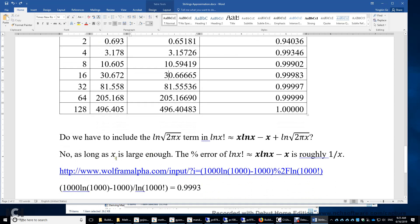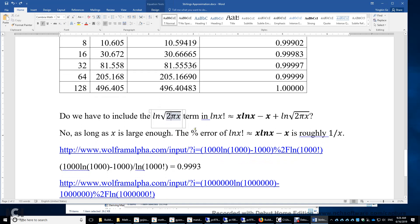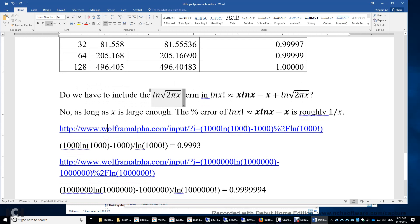But really, it depends. If x is large enough, we don't have to include this natural logarithm of the square root of 2 pi x. This is because the percent error of this approximation with only two terms is roughly 1 over x. So what does that mean? If x equals 1000, we expect the percent error to be only 0.1%.